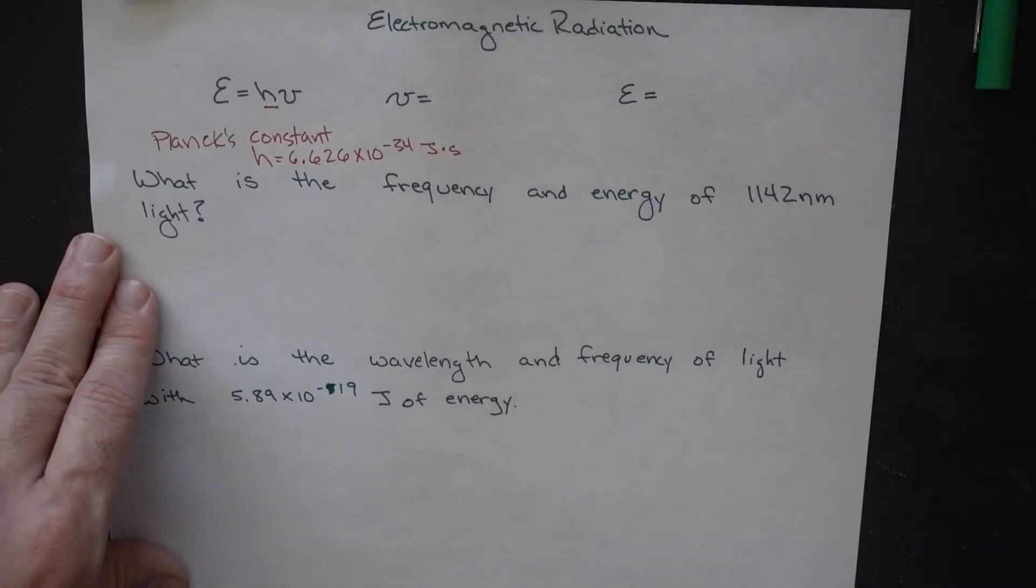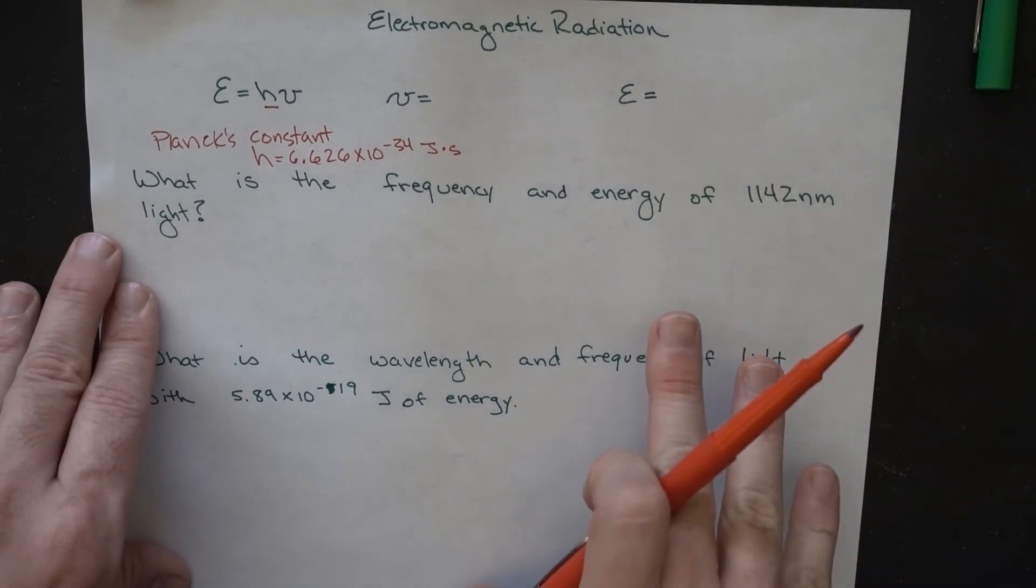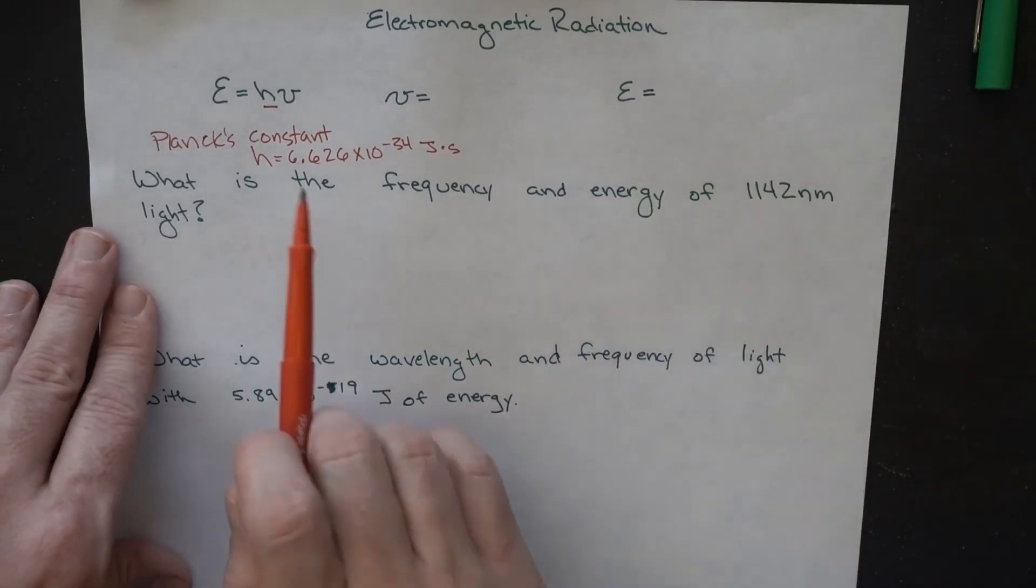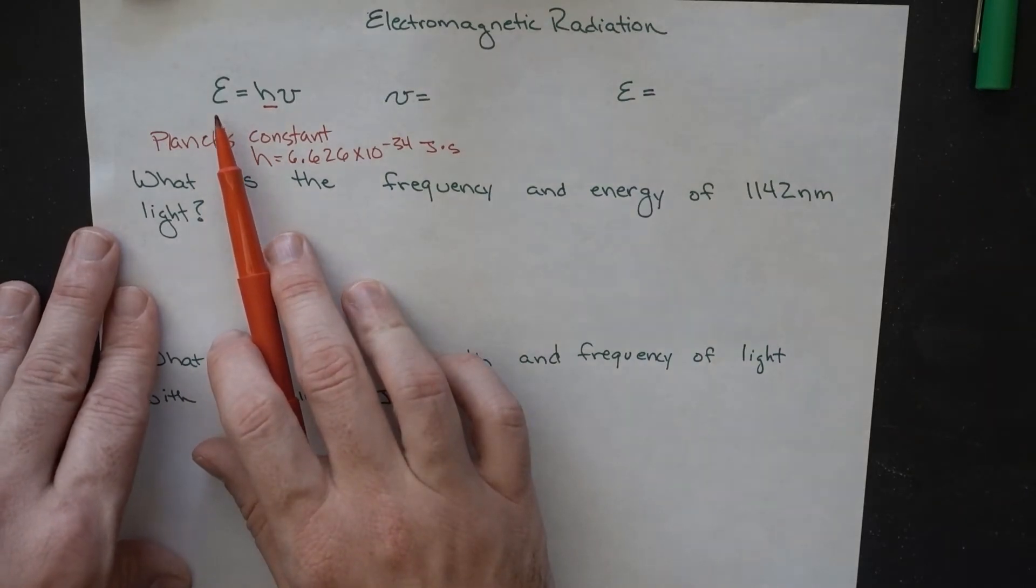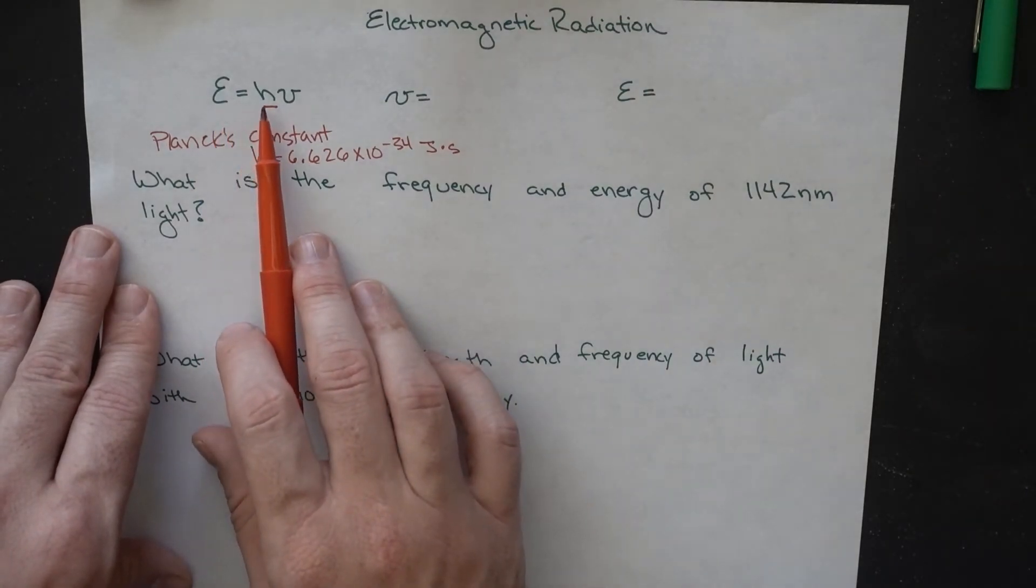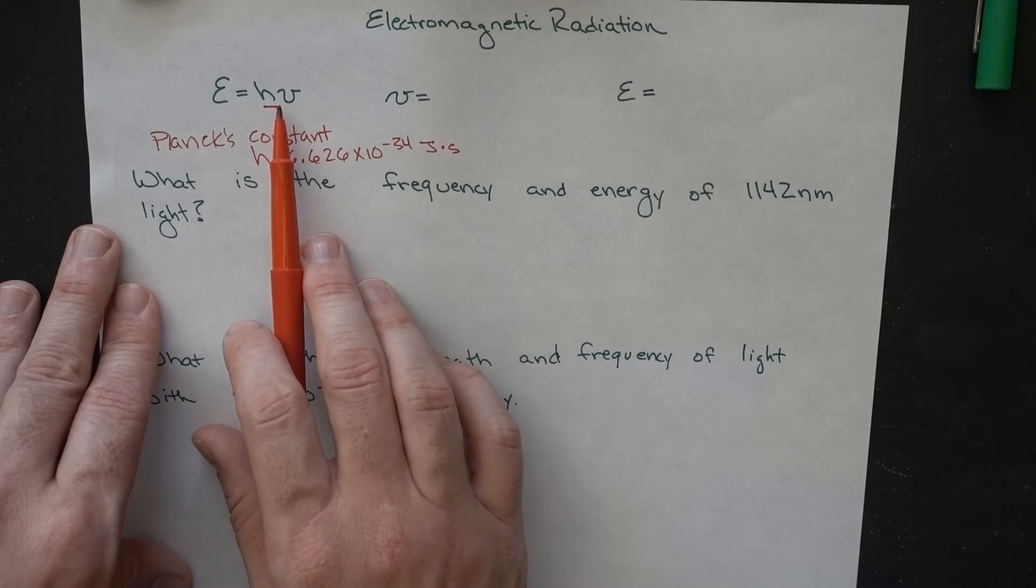But, as we were able to do more experiments and learn more things, we could start to observe them. We had this new equation that Einstein helped propose. That the energy that's being gained or lost is equal to Planck's constant times the frequency of the energy being given off.